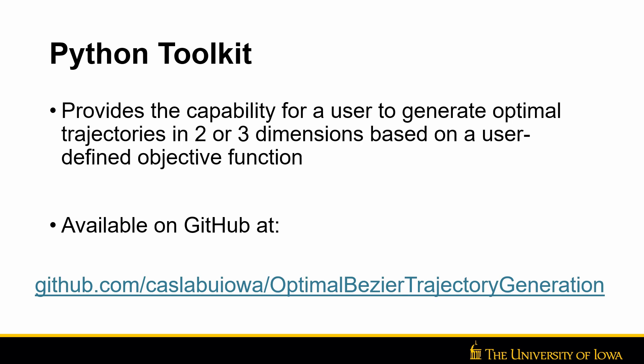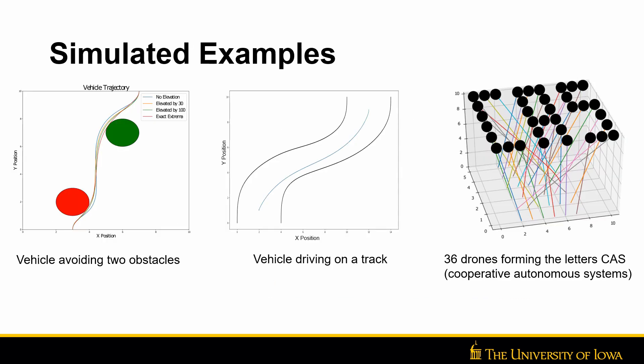The toolkit can be found on GitHub at the link shown on the screen. Some simulated examples include a vehicle avoiding two obstacles, a vehicle driving on a track, and 36 drones forming the letters CAS, which stands for Cooperative Autonomous Systems.